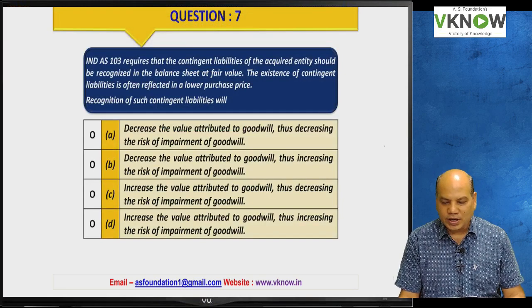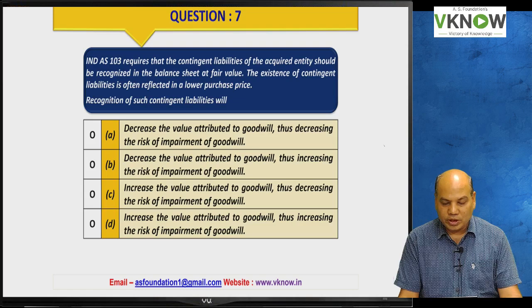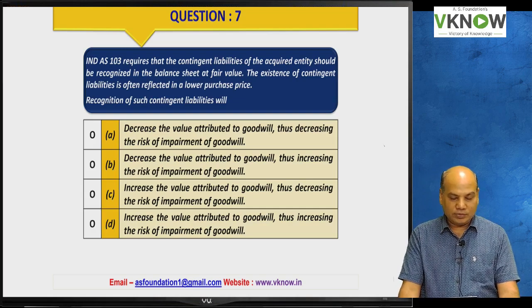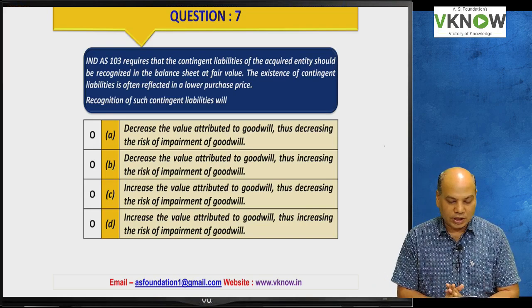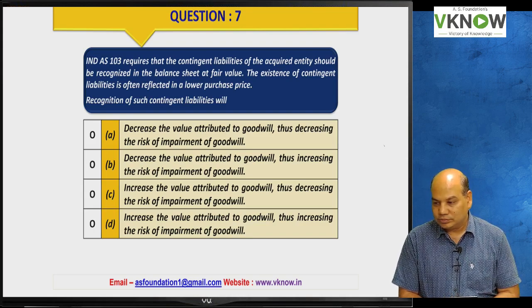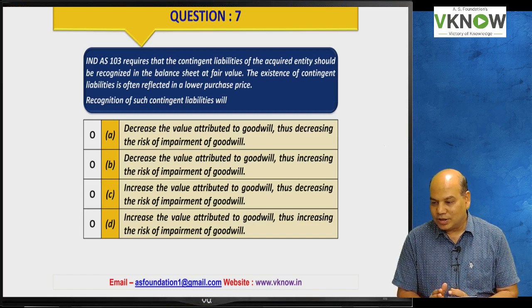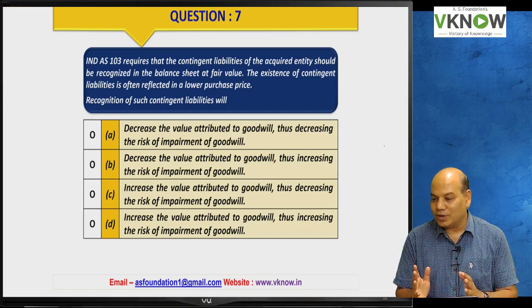Question number seven: Ind AS 103 requires that the contingent liability of the acquired entity should be recognized in the balance sheet at fair value. The existence of a contingent liability is often reflected in a lower purchase price. What will be the effect of recognizing this contingent liability — will it decrease the value attributable to goodwill thus decreasing the risk of impairment, decrease goodwill thus increasing the risk of impairment, increase goodwill thus decreasing the risk, or increase goodwill thus increasing the risk of impairment?